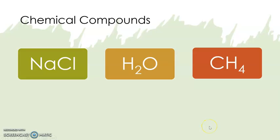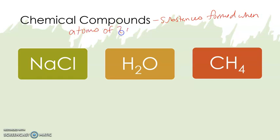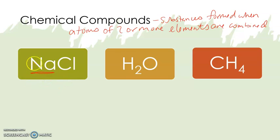When we take those atoms and put them together, we get chemical compounds. Chemical compounds are substances that are formed when atoms of two or more elements are combined. So Na is sodium, Cl is chlorine. I put sodium and chlorine together, I get NaCl — good old-fashioned table salt.